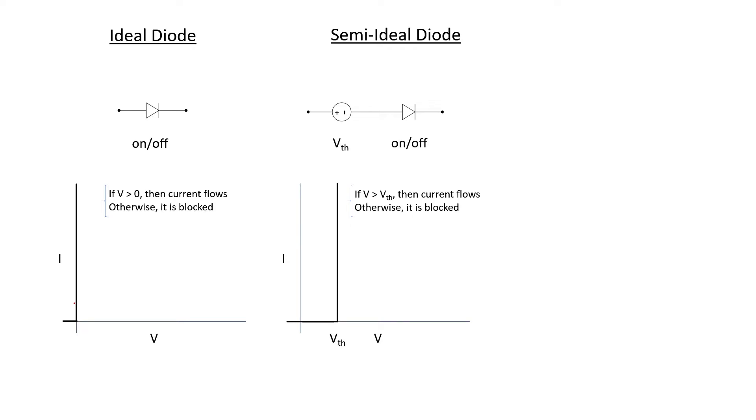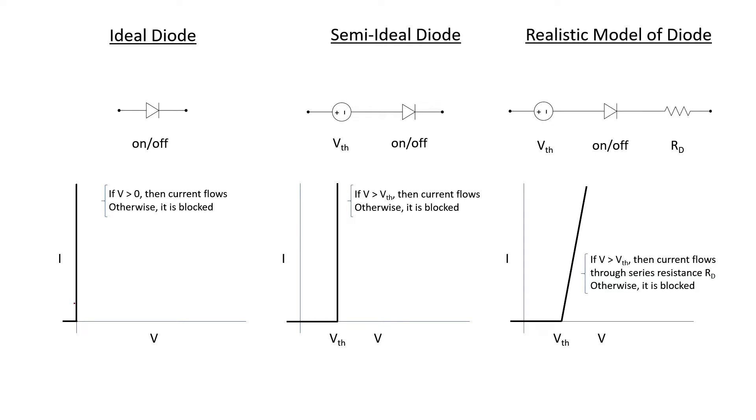Anything less than that, the current will be blocked. A more realistic model of a diode is now shown. If the voltage is greater than the threshold, then the diode has some built-in resistance as indicated by the slope of the line here. Otherwise, current is blocked if the voltage is below the threshold.